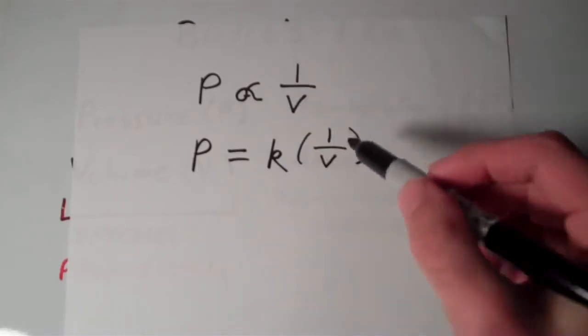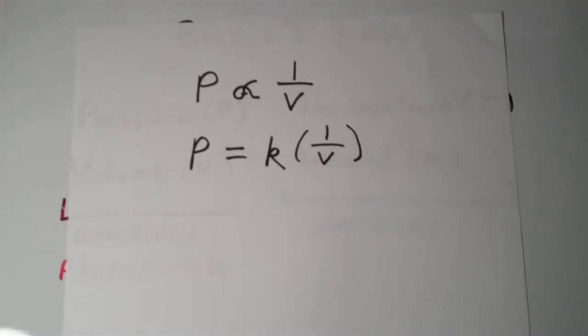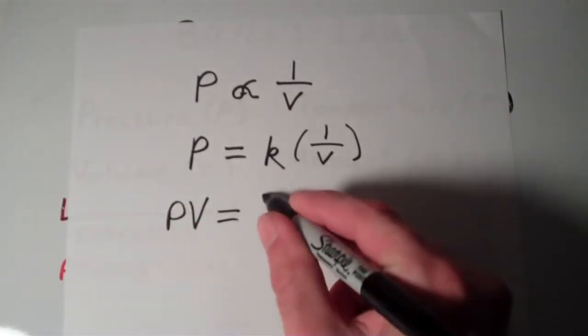So these two equations are basically saying the same thing. We can rearrange this equation further by multiplying both sides by V, and we'll end up getting that PV, P times V, is equal to K.